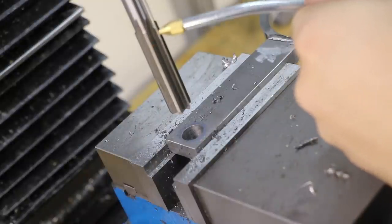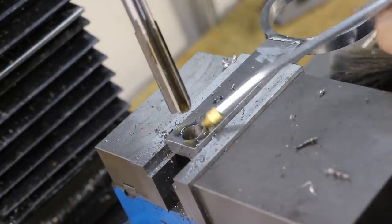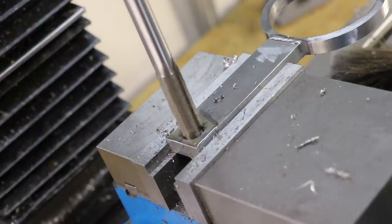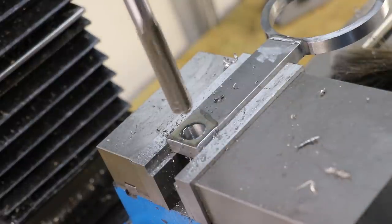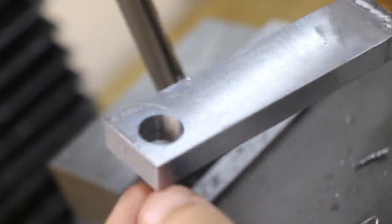Now this isn't necessary, but I'll ream the final hole to size. The last time I did this I incorrectly used the wrong RPM for a reamer, so this time let's not repeat that mistake. And the hole came out a lot nicer than it did before.